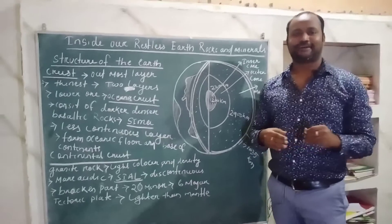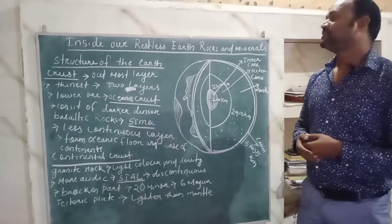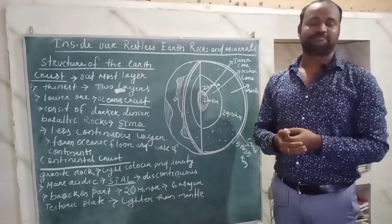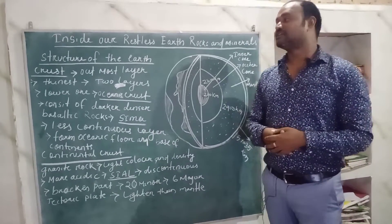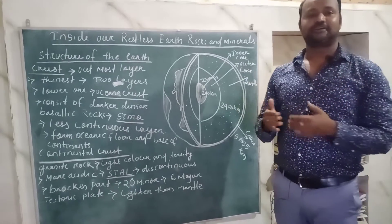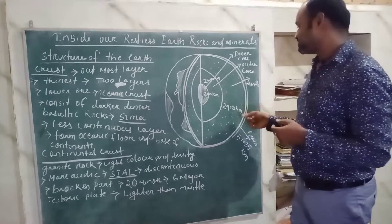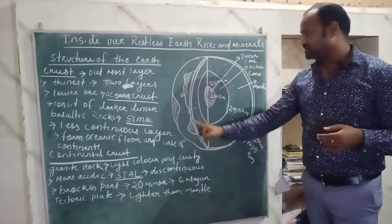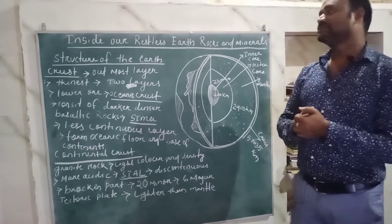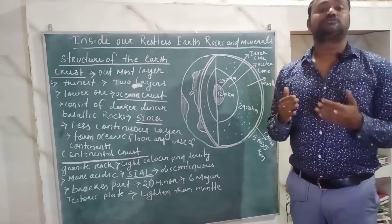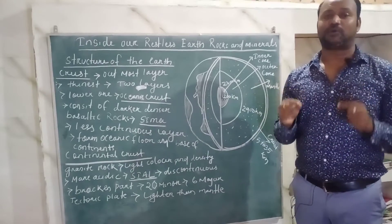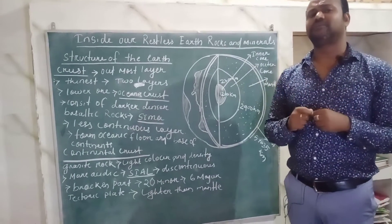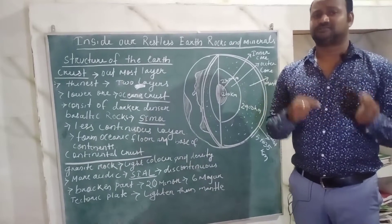Let's discuss the interior of the earth. The most important layer of the earth's surface is the crust. The crust is the thinnest layer of the interior of the earth and it is the outermost layer. The thickness of the crust varies from place to place, ranging from 5 kilometers to 35 kilometers.